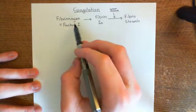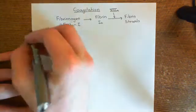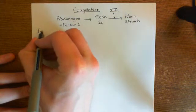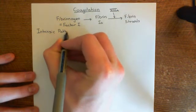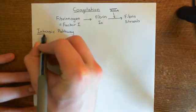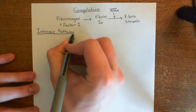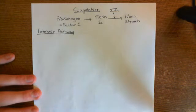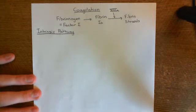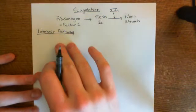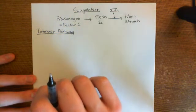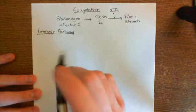There are two pathways which can activate the conversion of fibrinogen into fibrin. The first is the intrinsic coagulation pathway and the second is the extrinsic pathway. Collagen activates the intrinsic pathway, and exposed tissue factor activates the extrinsic pathway — the exact same two triggers that initiate platelet activation.